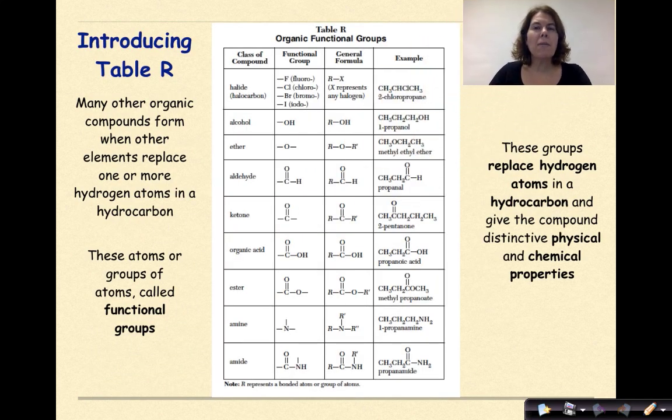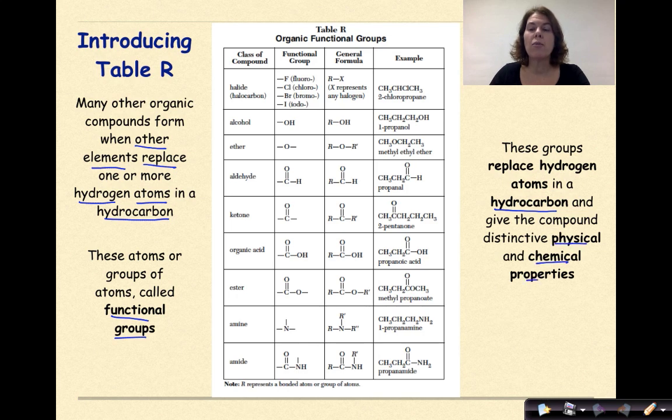So let's start off by talking about table R. Many other organic compounds form when other elements replace one or more hydrogen atoms in a hydrocarbon. These atoms, or groups of atoms, are called functional groups. So right now you should have table R open in front of you if you are taking regions chemistry, or you can look at the one on the screen.